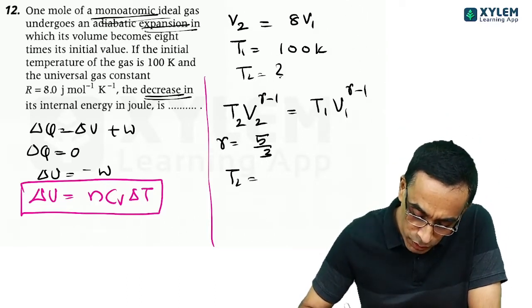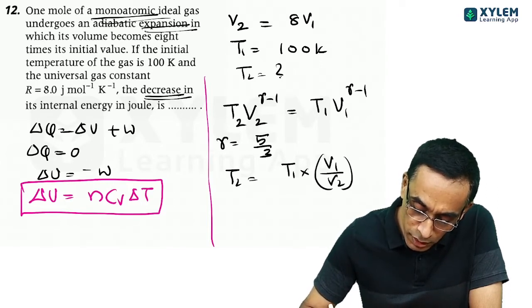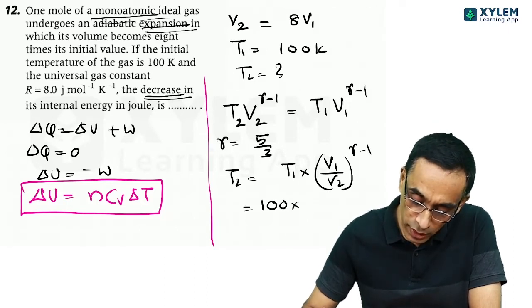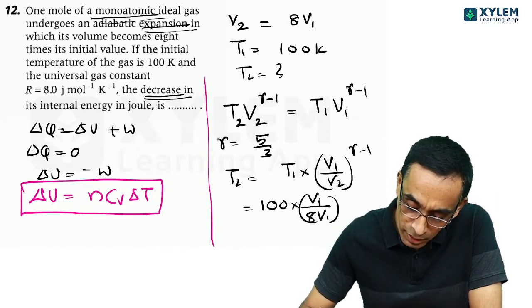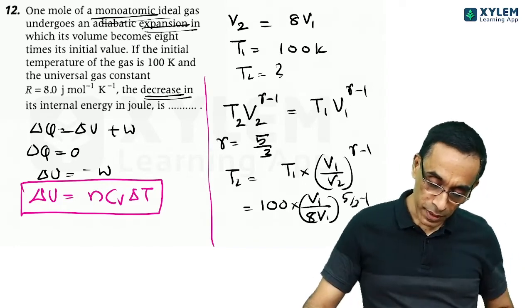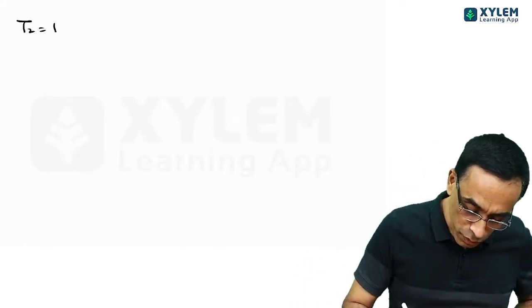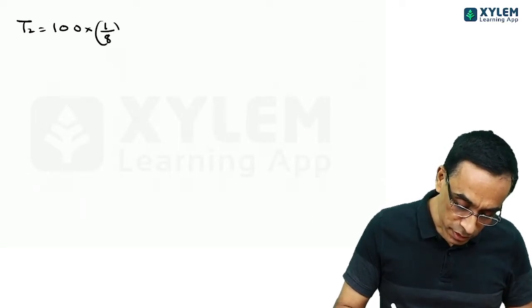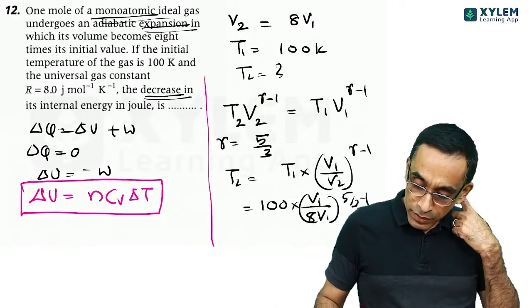Now we want T2. So T2 is nothing but T1 into V1 by V2 raised to gamma minus 1, which is 100 into, what is V1? V1. What is V2? 8V1 to the power gamma minus 1, 5 by 3 minus 1.